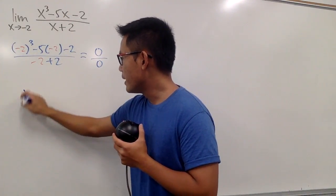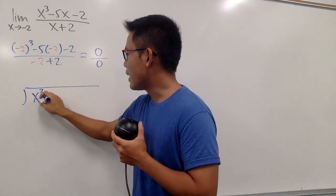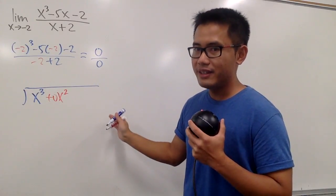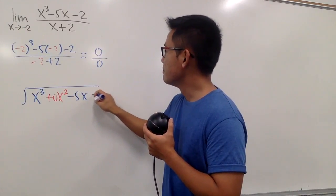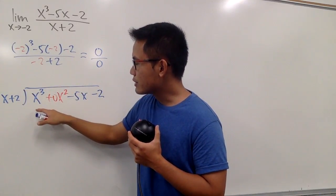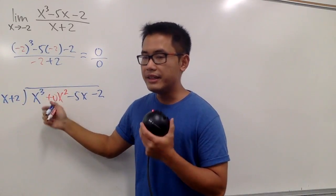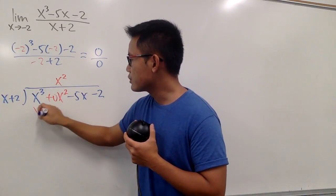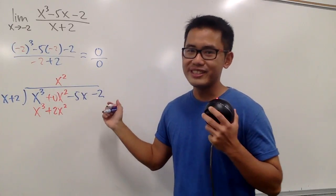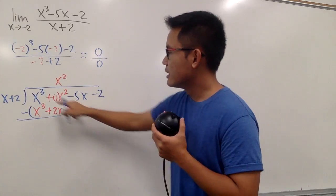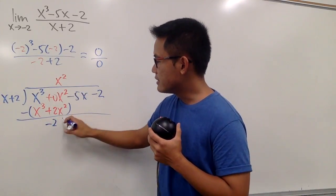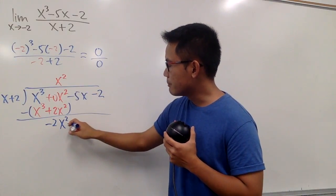I'll set up the long division bar and put x³ plus 0x² minus 5x minus 2 inside — we need all powers represented, so I include the 0x² term. Outside we put (x plus 2). Covering everything except the first terms: what times x gives x³? We need x². So x² times x gives x³, and x² times 2 gives plus 2x². Now subtract: x³ minus x³ is 0, and 0x² minus 2x² gives negative 2x². Bring down the next term: minus 5x.